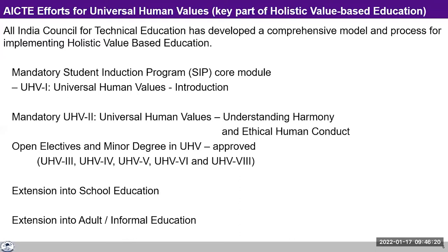The third is the Open Electives and Minor Degree in Universal Human Values, which has recently been approved and will be available as MOOCs on the SWAYAM portal. Until faculty members are ready to offer these courses, these electives will be available on the SWAYAM portal with a proper credit transfer scheme. The fourth one is extension into school education, and fifth is extension into adult or informal education. AICTE has been making all these efforts for incorporating human values in formal and informal education.